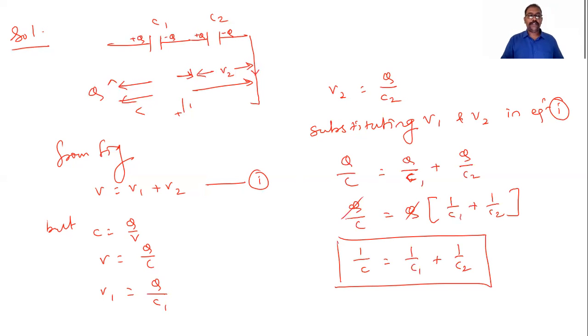In general, when we connect multiple capacitors in series, you can write 1 by C equals 1 by C1 plus 1 by C2 plus dot dot dot plus 1 by Cn. This is the general formula.